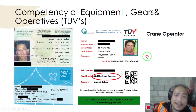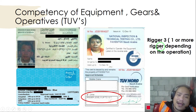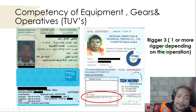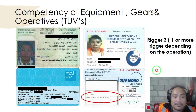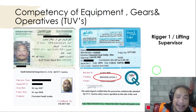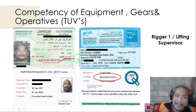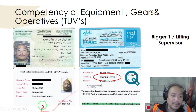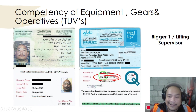For the rigger, the same applies — national ID, insurance, and TÜV card for Rigger Level 3, Level 2, or Level 1, depending on the operation. As the lifting supervisor, I hold a Rigger Level 1 certification, also requiring national ID, insurance, and a TÜV card stating Rigger Level 1 with a valid, non-expired certification.